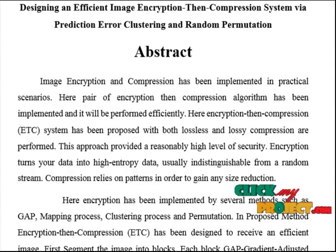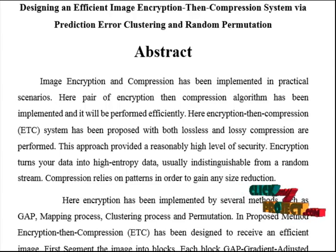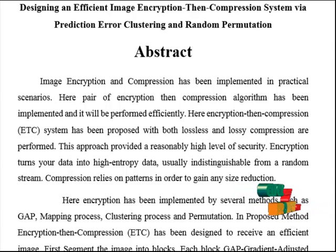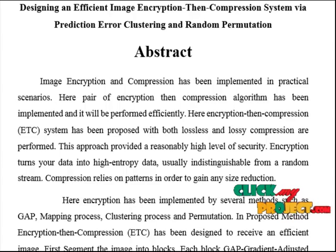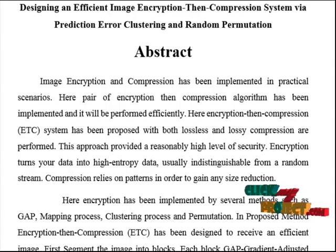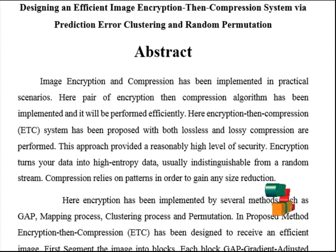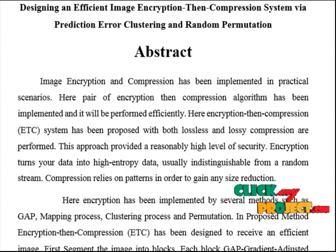Encryption has been implemented by several methods such as the GAP (gradient adjusted prediction) mapping process, clustering process, and permutation. In the proposed approach, encryption-then-compression is designed to receive an efficient image. First, the image is segmented into blocks. Each block's GAP scheme is implemented to achieve better speed and better prediction accuracy, providing potential for further improvements in lossless image compression. Next, a clustering algorithm is proposed — here the zigzag raster diagonal algorithm has been implemented.